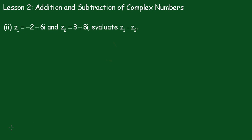Now with subtraction, we have to be a little bit careful. So I'll write this out as Z1 minus Z2 equals minus 2 plus 6i minus 3 plus 8i. And now remove the brackets.